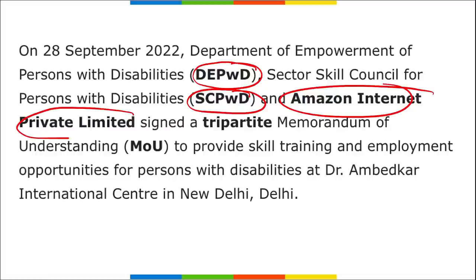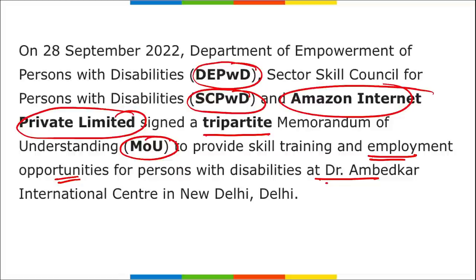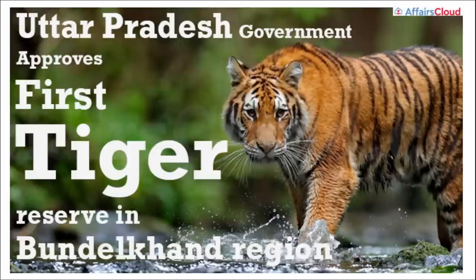This tripartite MOU between DEPWD, Sector Skill Council for Persons with Disability, and Amazon Internet Private Limited will be implemented at Dr. Ambedkar International Centre in New Delhi. Amazon will provide skills to persons with disabilities and also provide them with employment opportunities.